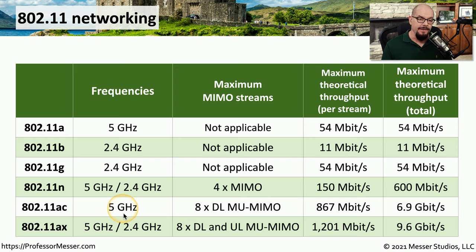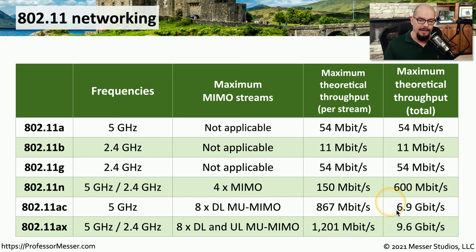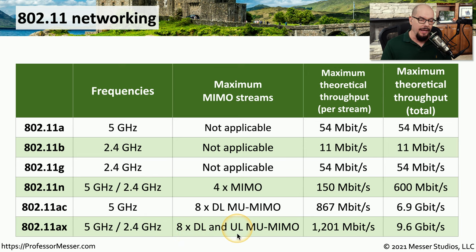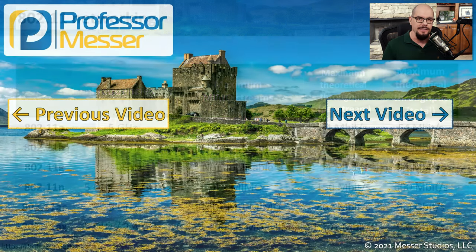802.11ac operates in the 5 gigahertz band and allows for multi-user MIMO on downloads using a maximum of 8 MIMO streams. Each stream operates at roughly 867 megabits per second, making the total maximum theoretical throughput 6.9 gigabits per second. 802.11ax operates in either 5 gigahertz or 2.4 gigahertz and supports bi-directional multi-user MIMO over eight total streams. Each stream supports roughly 1,200 megabits per second, with a total maximum theoretical throughput of 9.6 gigabits per second.